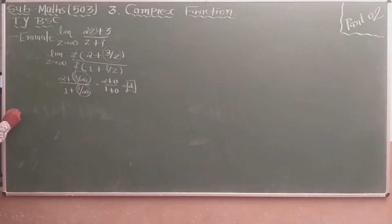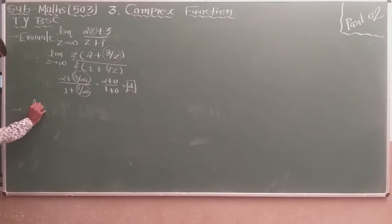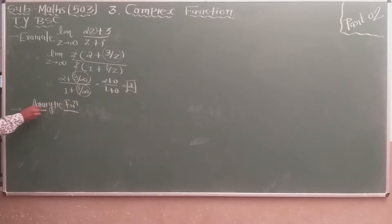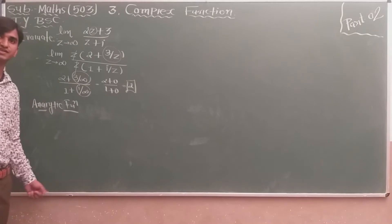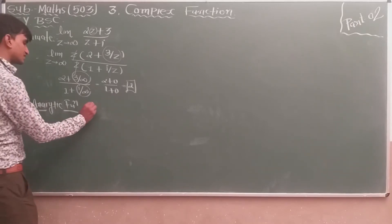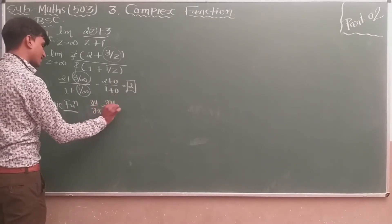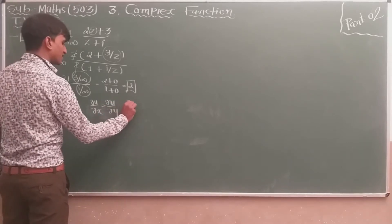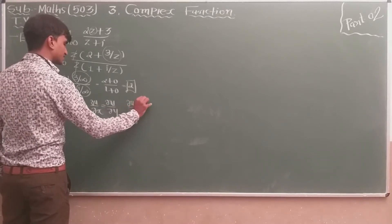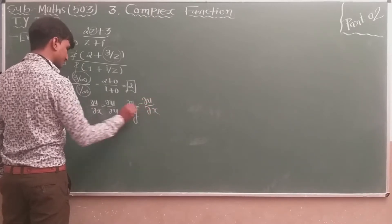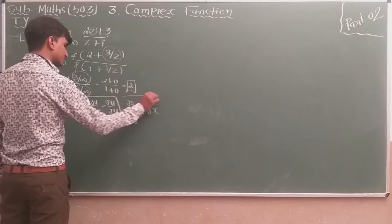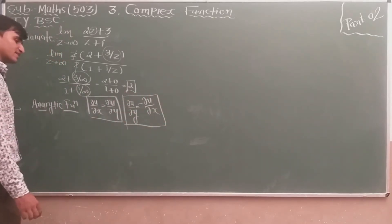In the first lecture, we also discussed the analytic function and its conditions. The Cauchy-Riemann conditions for an analytic function are: first, ∂u/∂x = ∂v/∂y, and second, ∂u/∂y = −∂v/∂x. These two are the necessary conditions of an analytic function. Here z = u + iv, where u is a function of x and y, and v is also a function of x and y.